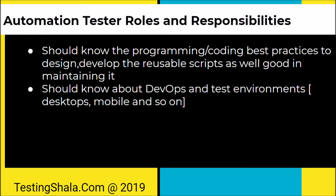Because most products are moving to agile, being an automation tester you should know about the DevOps journey — that is where the infrastructure is provided to run your scripts on a day-to-day basis or as and when developers check in code. You should know about the environments used in DevOps, whether they are desktops, mobile, or any other infrastructure.